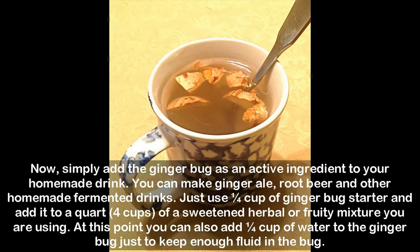Now simply add the ginger bug as an active ingredient to your homemade drink. You can make ginger ale, root beer, and other homemade fermented drinks — just use one fourth cup of ginger bug starter and add it to a quart (four cups) of a sweetened herbal or fruity mixture. At this point you can also add one fourth cup of water to the ginger bug to keep enough fluid in it.